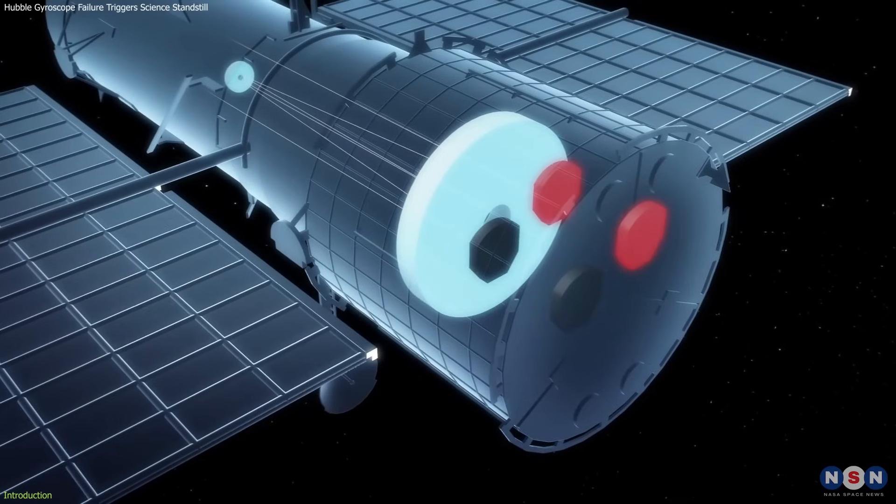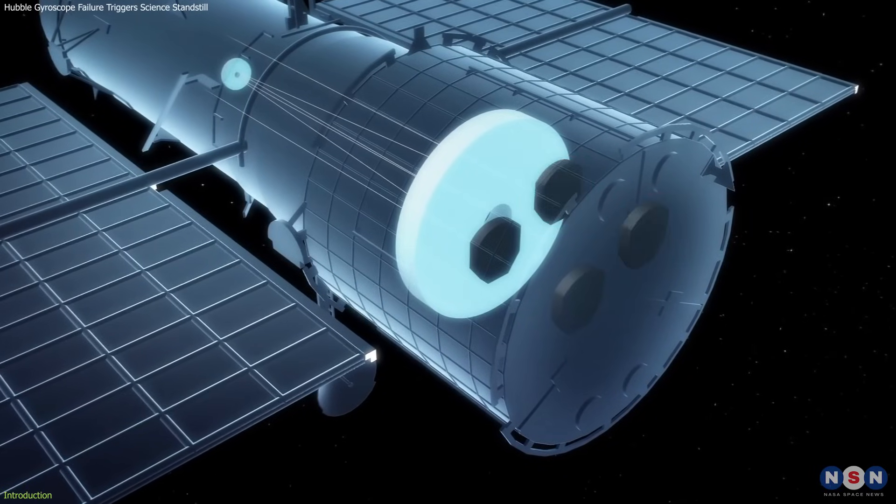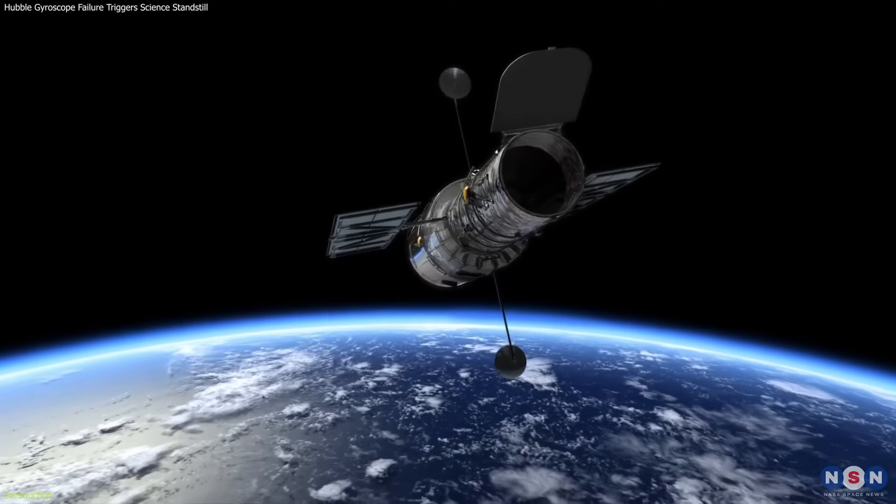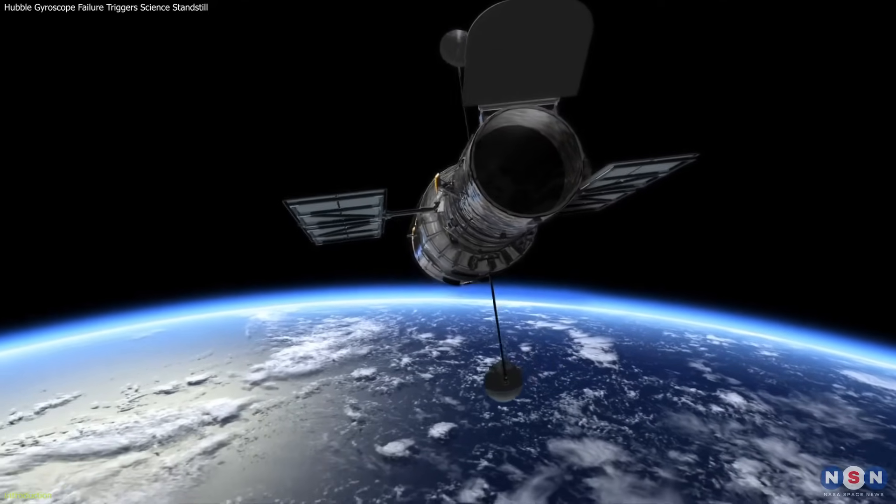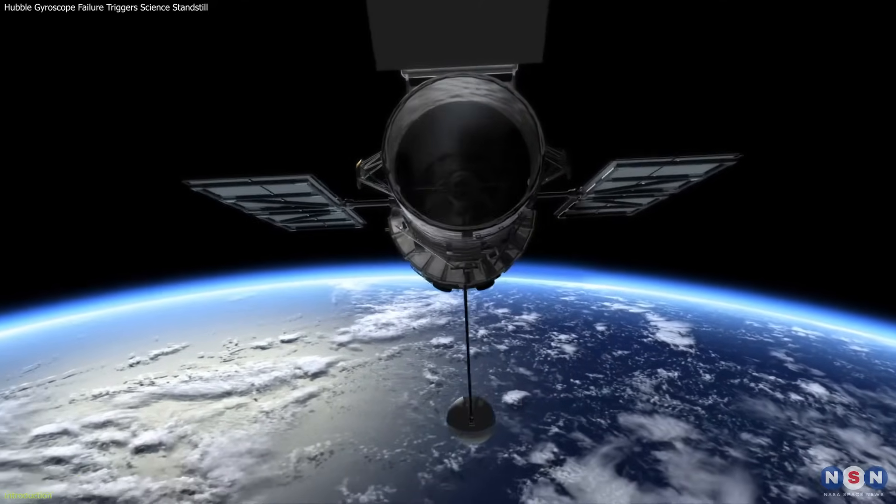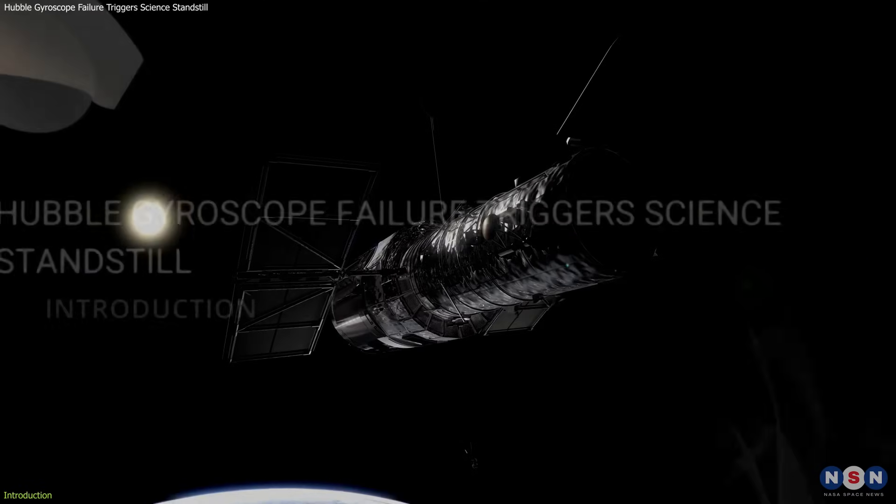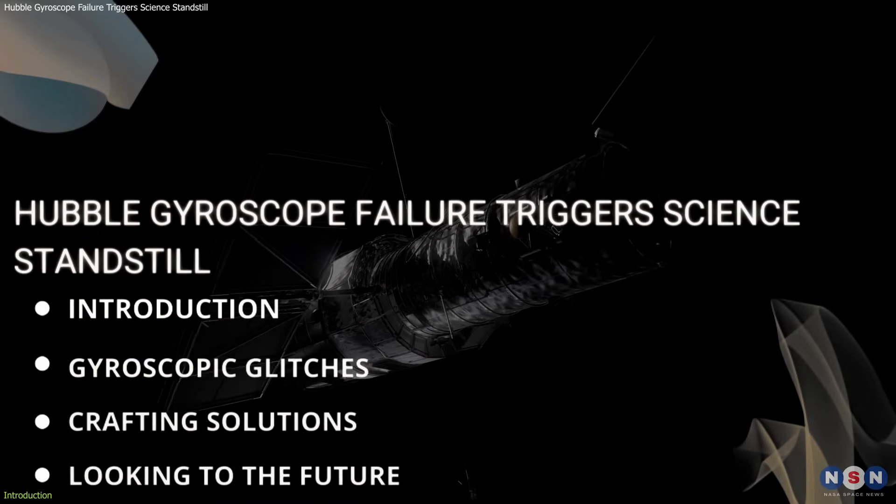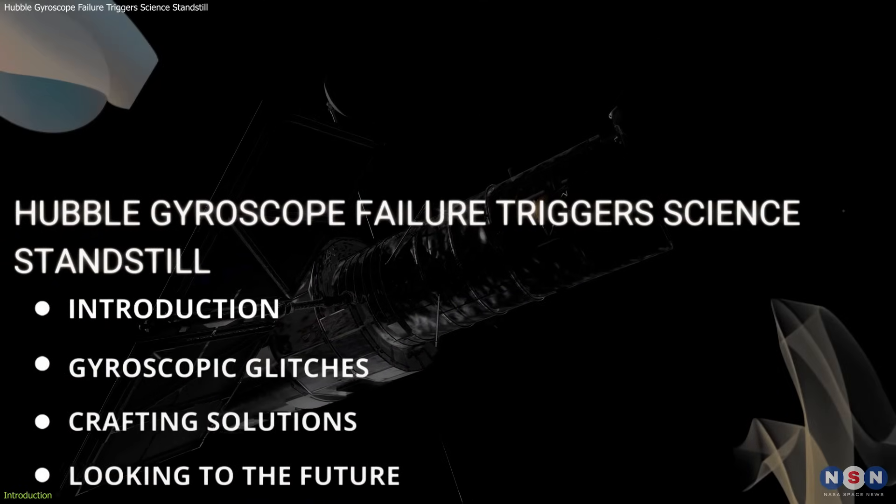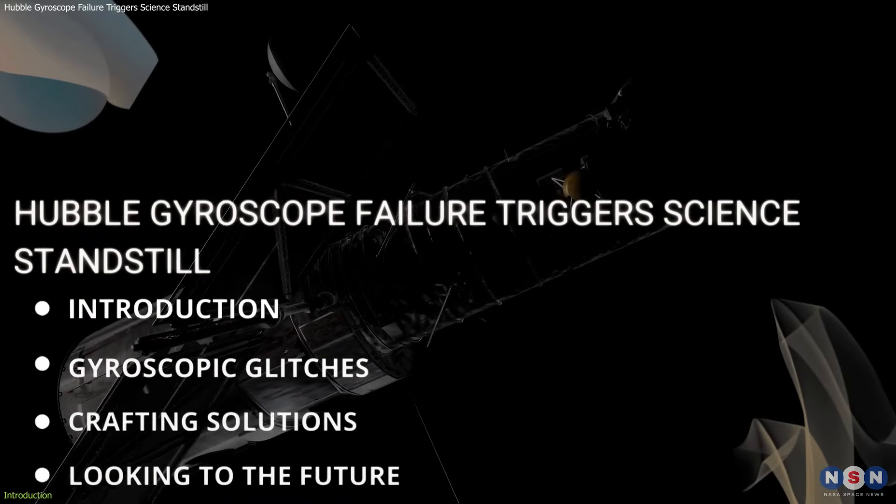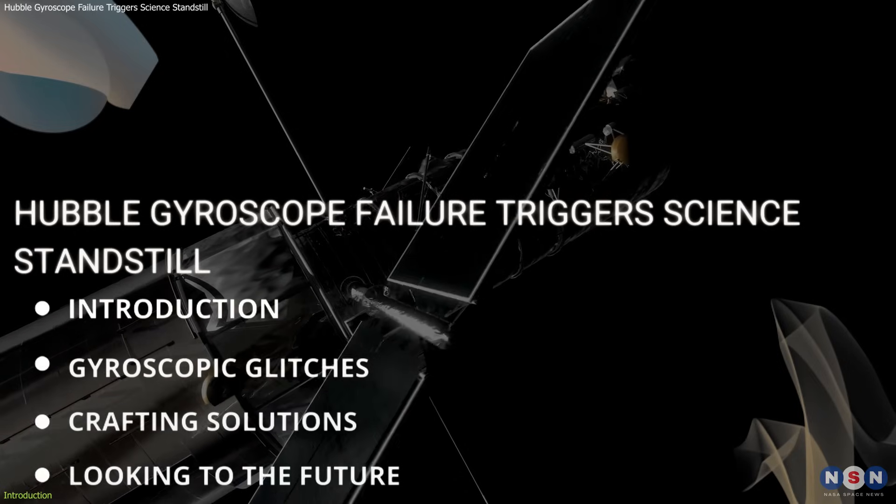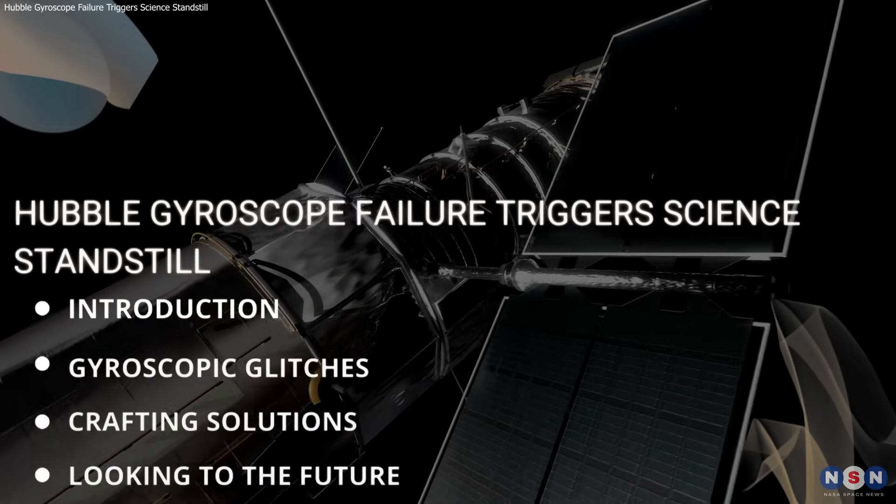The gyroscope's malfunction presents a significant challenge, not just in terms of immediate repairs, but for the long-term operational strategy of this iconic observatory. In this video, we will discuss the impact of this malfunction, explore NASA's tactical response, and consider what the future holds for Hubble as we navigate these complex technical challenges.